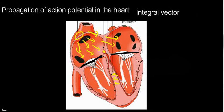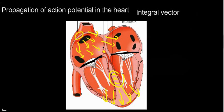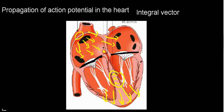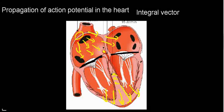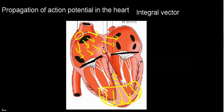We're going to see these little vectors. And then we're going to have a very big major event — the depolarization of the ventricle itself. The septal tissue is also ventricular septal tissue, so this is also the depolarization of the ventricles, but this is a more major event.